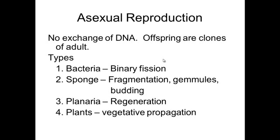Sponges have three forms of asexual reproduction: fragmentation, the production of gemules, and budding. Fragmentation means if a sponge gets broken into five pieces during a bad storm, each of those five pieces can grow into an adult sponge. Budding is when an adult sponge forms a baby sponge on its side, which breaks off and becomes an adult sponge identical to the parent.